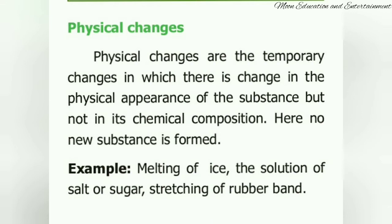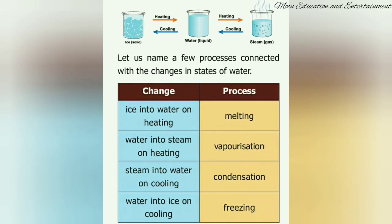Physical changes: as the name says, a physical change alters only the physical appearance of a substance, but not its chemical composition. In physical change, no new substance is formed. Examples include melting of ice, dissolving salt or sugar in water, and stretching of rubber bands. When ice is heated, it becomes liquid water; when further heated, it becomes water vapor. When cooled, vapor becomes water again, and further cooling gives back ice — only the physical state changes, with no new chemical composition formed.